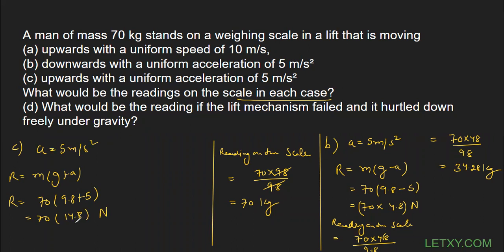The reading on the scale = (70 × 14.8) / 9.8 = (70 × 148) / 98 ≈ 105.71 kg. When the lift moves upward, the reading on the scale increases. To clarify: the actual mass of the person never changes — it remains 70 kg. What changes is only the apparent mass, which is what the scale reads.